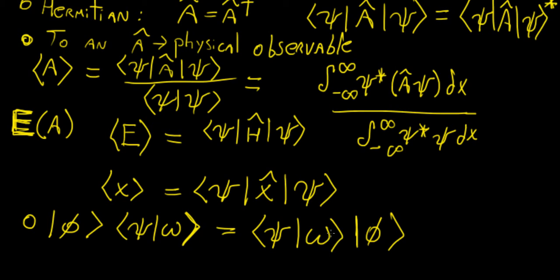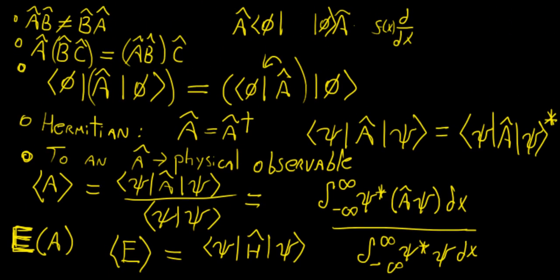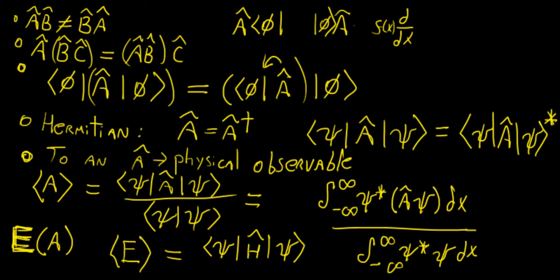That's essentially what the properties of operators are. We'll continue this discussion in the next video, where we'll talk about more properties including commutability, and then solve some examples to find average values of a particular wave function.